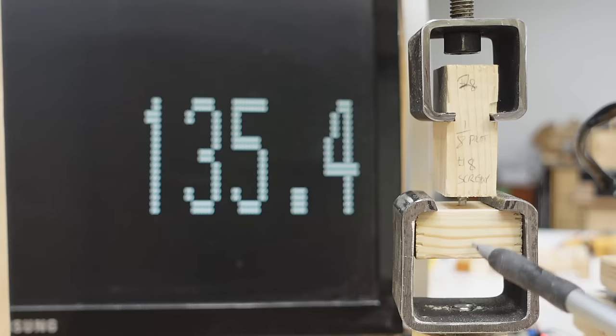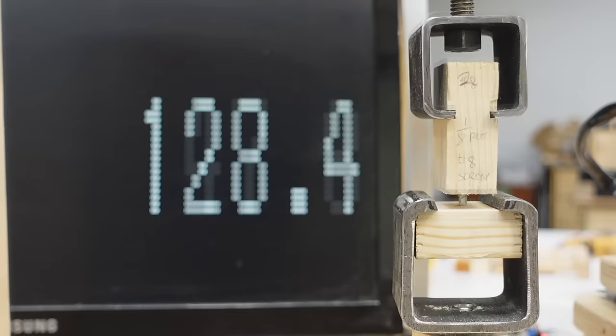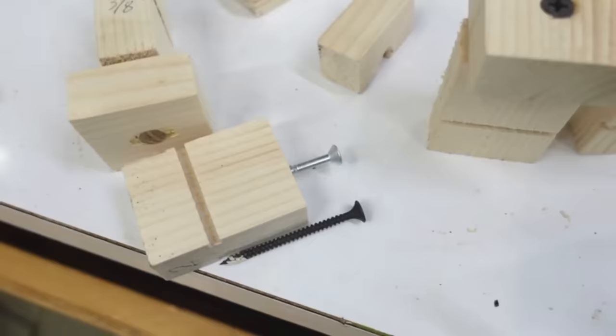The screw is still holding in this part here, even though it's screwed into end grain. Well, and it finally failed just splitting apart. Now, this screw head is kind of a wedge that helps to split the wood apart. A drywall screw's got a much flatter head. So, let's try that next.